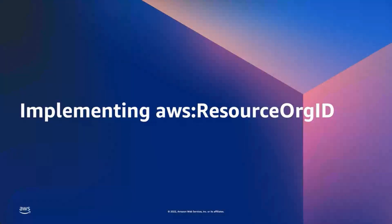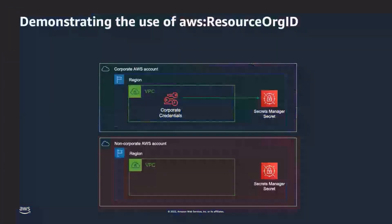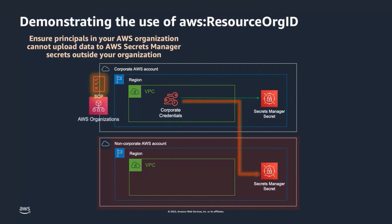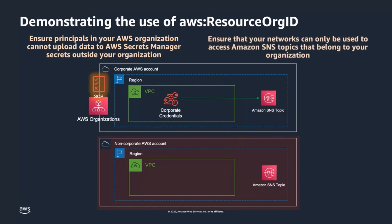To illustrate how to use AWS Resource Org ID in practice, let's go over a couple of use cases. In the first example, I will use an SCP to show you how to implement a data perimeter that helps ensure that your principals cannot upload data to AWS Secrets Manager secrets created outside of your organization. In my second example, I will use a VPC endpoint policy to show you how to create a data perimeter that helps ensure that your networks cannot be used to upload data to Amazon SNS topics created outside of your organization.